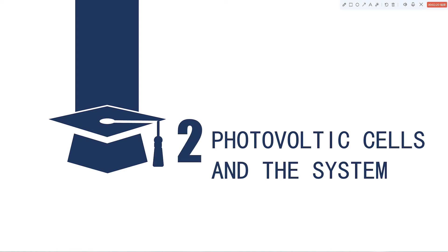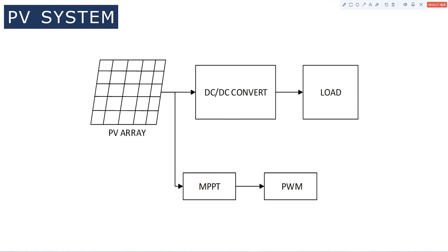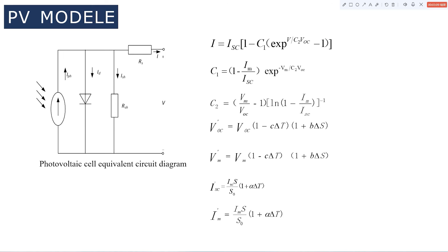Part 2 is the photovoltaic cell system. A PV system is mainly composed of the PV array, DC-DC converter, maximum power point tracking module, and PWM model. The theory of the PV system is that when photovoltaic cells receive light, they generate voltage and current. The duty cycle of the converter is then adjusted to change the output to what the MPPT model requires.